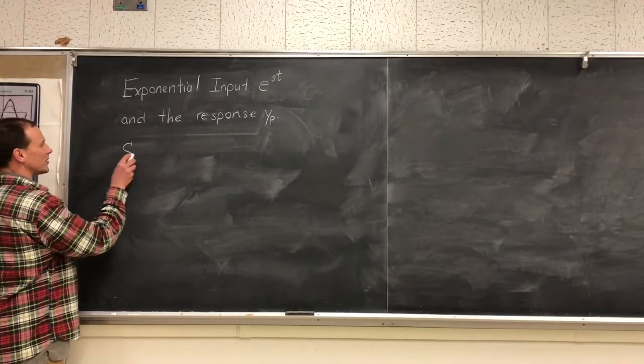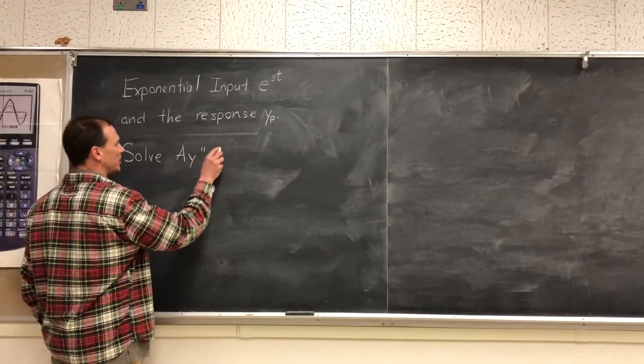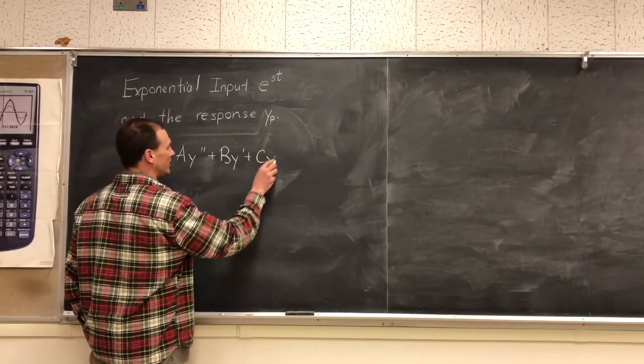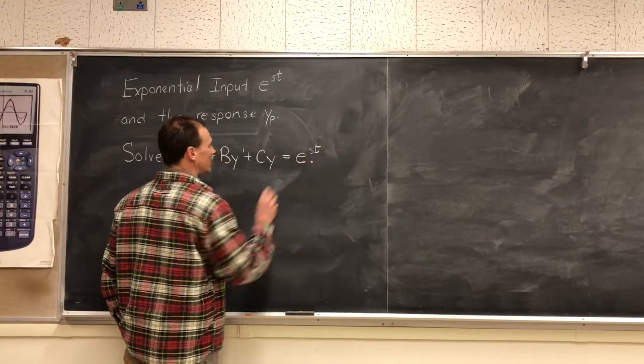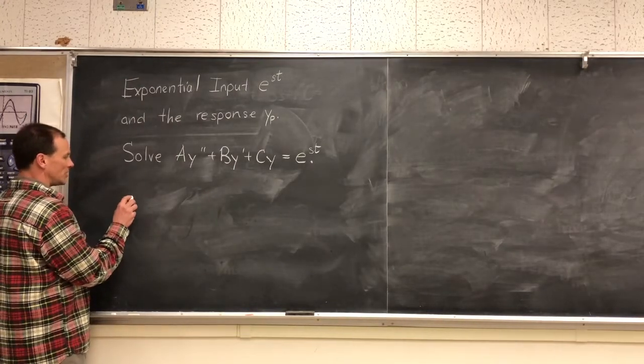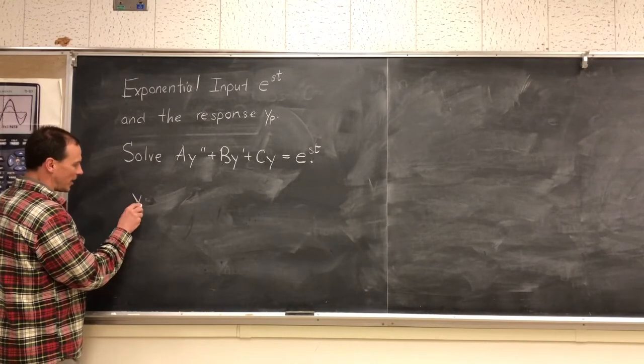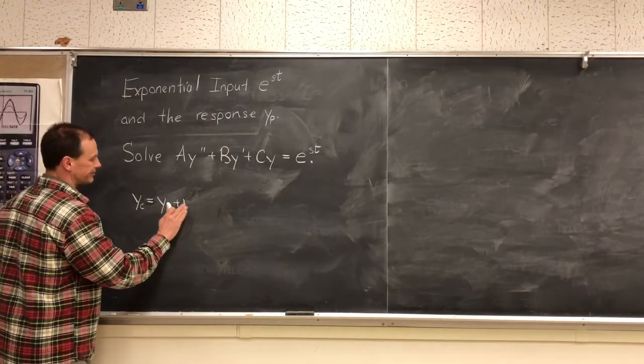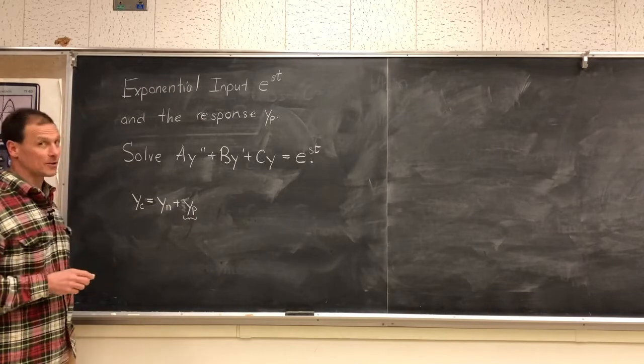We're going to solve Ay'' + By' + Cy = e^(st). In our previous videos we've already seen the null solution, so remember the general solution is y, sometimes written as yc for y complete, equals y null plus y particular. Today we're going to just find the particular part of our solution.